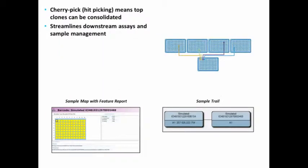Once clones are screened downstream, we have a cherry picking or hit picking capability, which means that top clones can be picked and consolidated into a single 96 or 384 well plate.